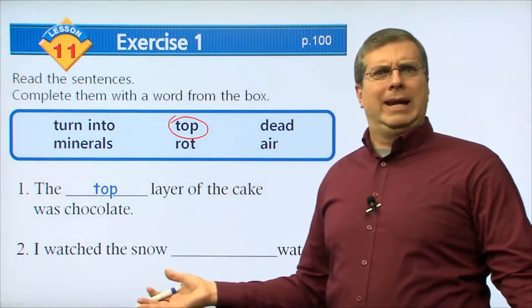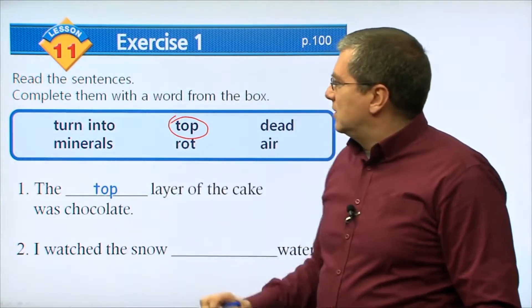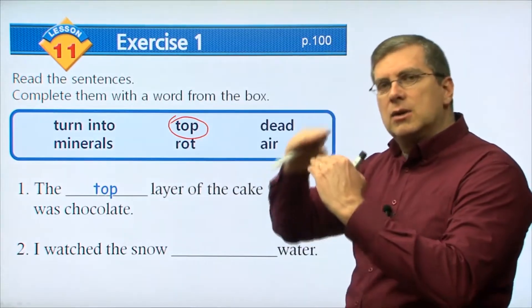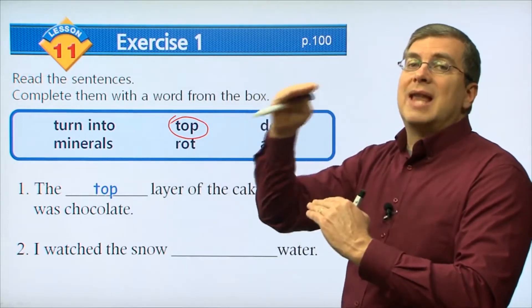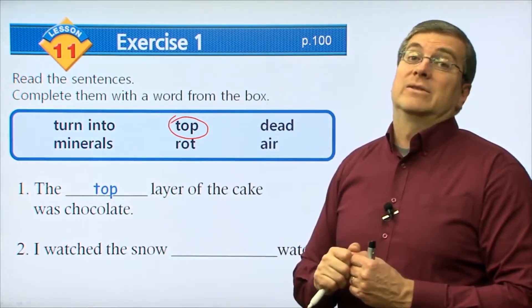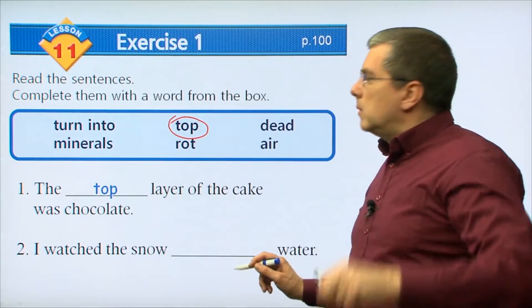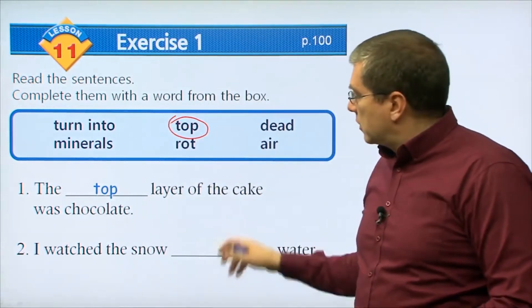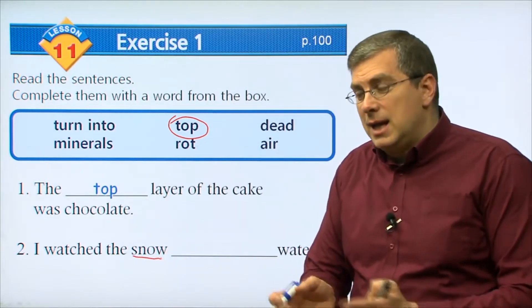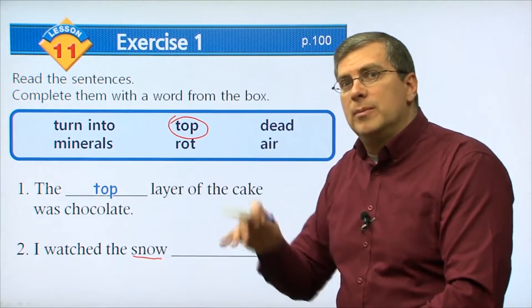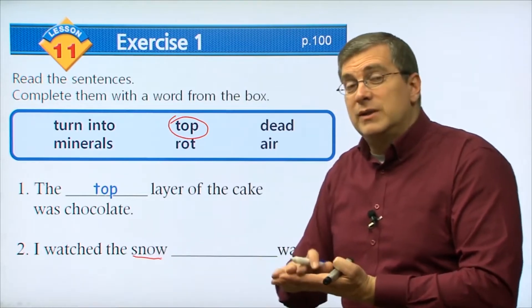Number twelve: having a special use. Something that has a special use — we can say it's important. Here we have a little girl getting ready for bed with a teddy bear. The teddy bear is very important to the girl. What is important in your life? Maybe a favorite toy, a book you like to read, or your family members — your mom, your dad, your brothers and sisters. These things have not just a special use, but a special value to you. They are important.